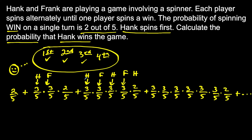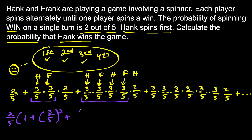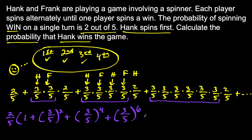We have to look for the pattern. Each term in the sum has a factor of two-fifths that can be taken out. So we'd have two-fifths times the quantity one plus three-fifths squared, plus three-fifths to the fourth power, plus three-fifths to the sixth power, and so on. This is a geometric series inside the parentheses, and our common ratio is three-fifths squared.